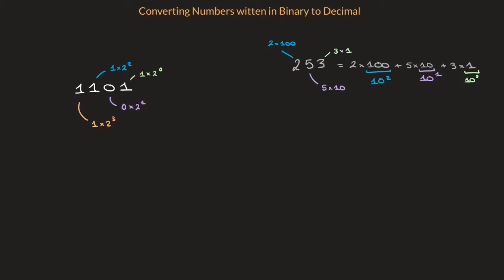And so, with those results in mind, reading this number from left to right, we can see that this equals 1 times 2 raised to the power of 3, plus 1 times 2 raised to the power of 2, plus 0 times 2 raised to the power of 1,